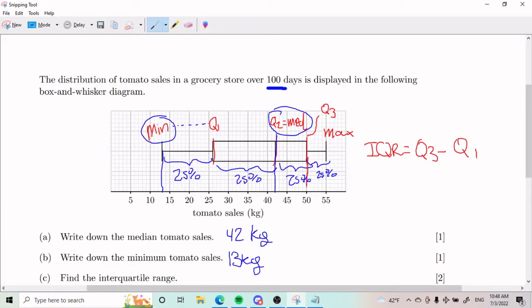Q3 minus Q1. We look at Q3, we see that it's 50. Q1 is 26. That gives us 24. So that would be part C.